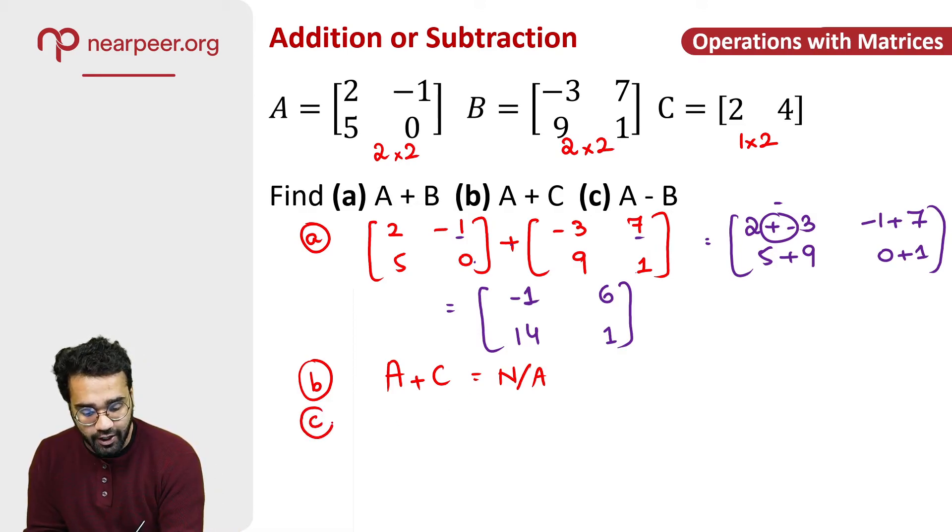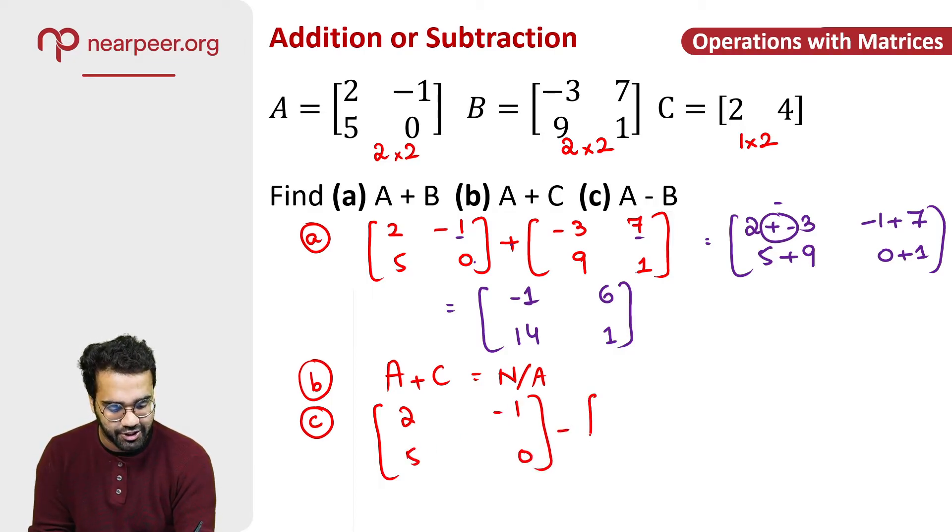Moving on to the last part, A minus B. So that would be 2, minus 1, 5, 0. I've written A. This is matrix A. There's a minus here. And then B is minus 3, 7, 9, and 1.